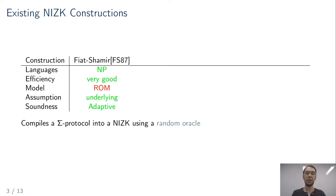Security of Fiat-Shamir can be reduced to the properties of the underlying sigma protocol, and since we can compile all public-coin constant-round protocols, we can prove all statements over NP. However, the hash function has to be modeled as a random oracle, so in the standard model this security is in a way heuristic, and we would like to avoid this.